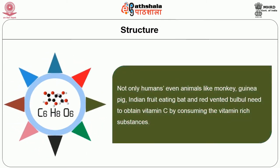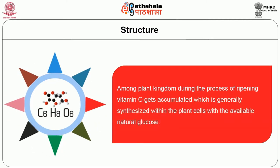Not only humans, but even animals like monkeys, guinea pigs, Indian fruit-eating bats and red-vented bulbuls need to obtain vitamin C by consuming vitamin-rich substances. Among the plant kingdom, during the process of ripening, vitamin C gets accumulated, which is generally synthesized within the plant cells from the available natural glucose.